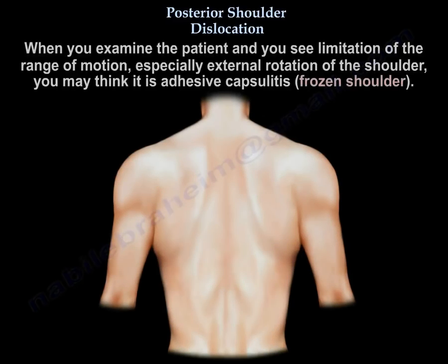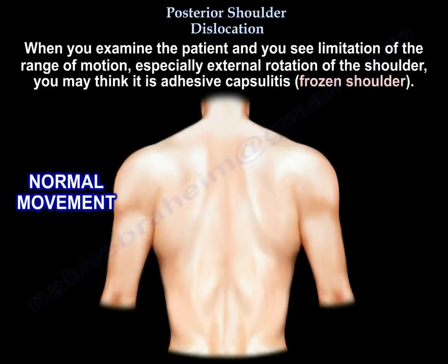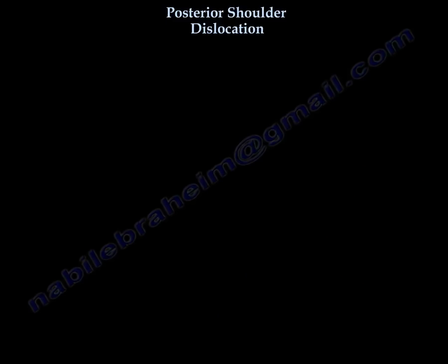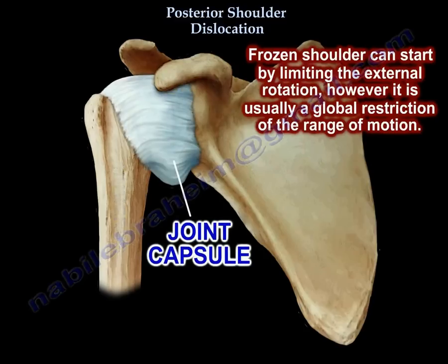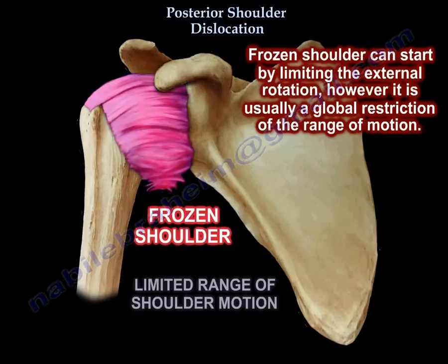When you examine the patient and see limitation of range of motion — especially external rotation of the shoulder — you may think it's adhesive capsulitis or frozen shoulder. Frozen shoulder can start by limiting external rotation; however, it is usually a global restriction of the range of motion.